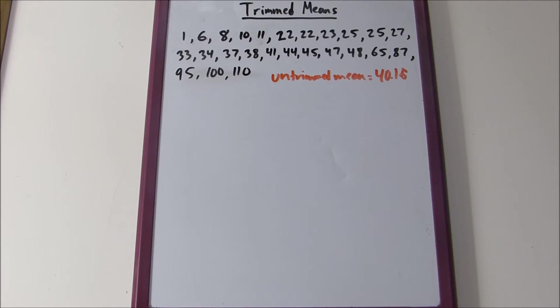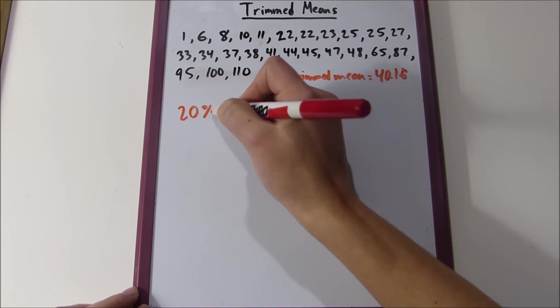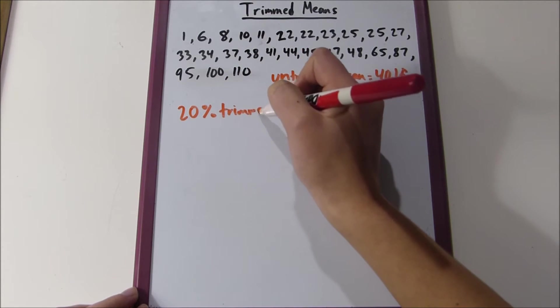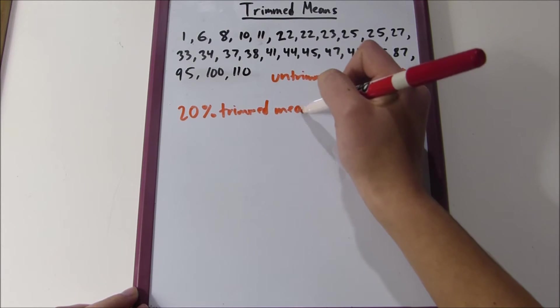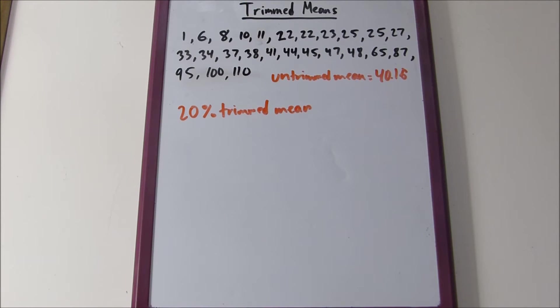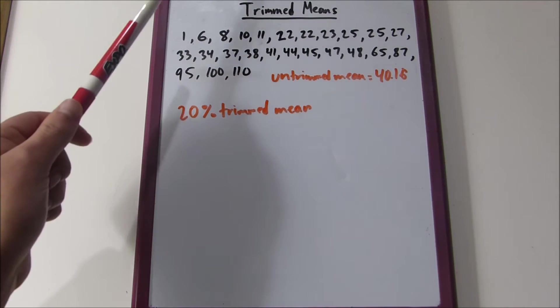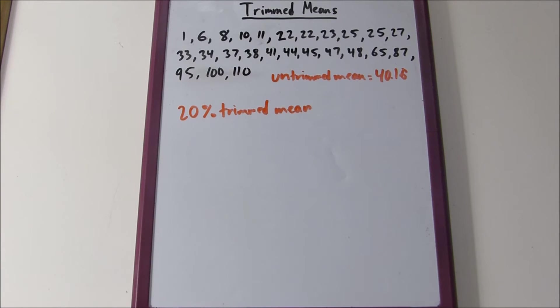Let's trim the distribution to find the trimmed mean. Let's say a problem asks you to find the 20% trimmed mean. What does that mean? The 20% trimmed mean wants 20% from each end of the distribution. If we find 20%, 20% of 25 is 5, so you want to take off five values from each end of this distribution.